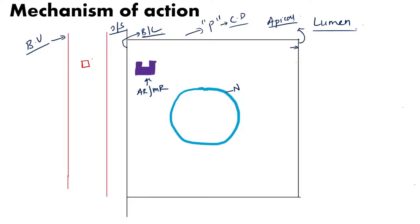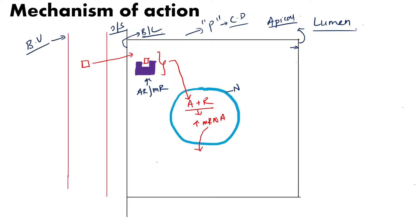Aldosterone is present in the blood vessels. Being a hormone, it is secreted into the blood. Aldosterone enters into the cell and binds with the aldosterone receptor. This hormone-receptor complex then enters into the nucleus, where it stimulates the process of transcription and hence stimulates the production of mRNA. This mRNA diffuses out of the nucleus and increases protein synthesis, producing transmembrane proteins.